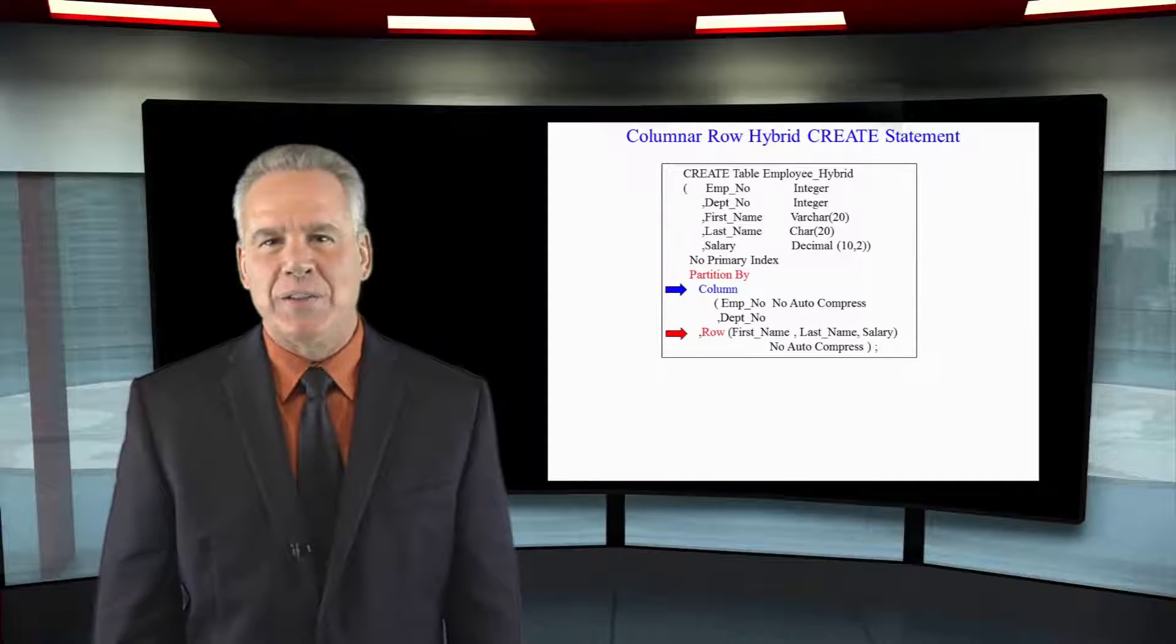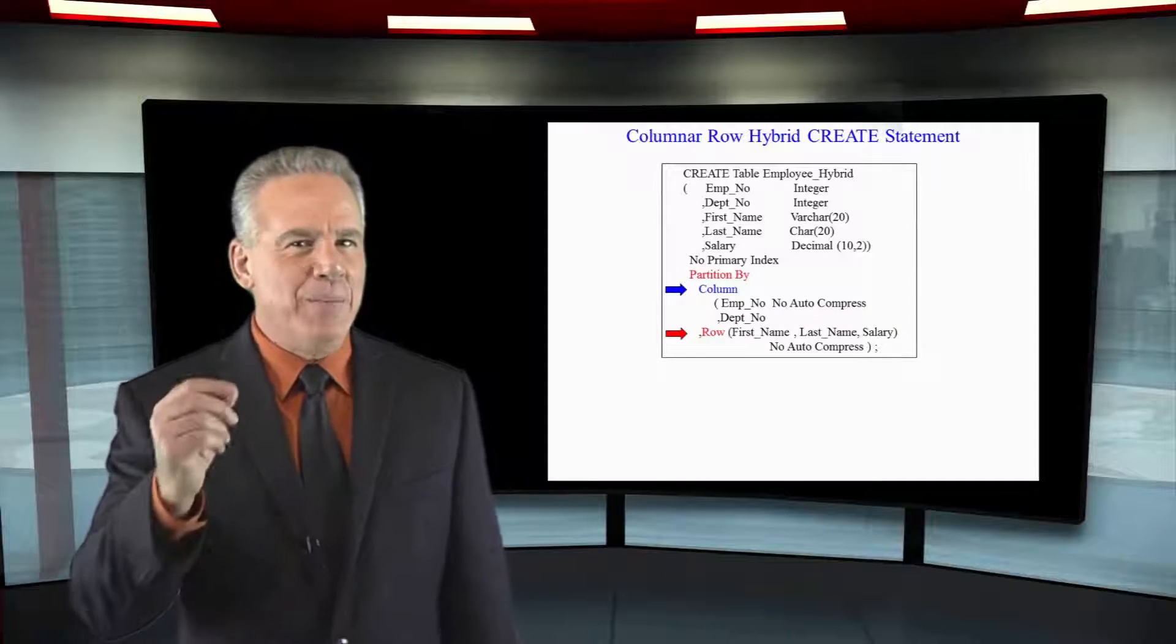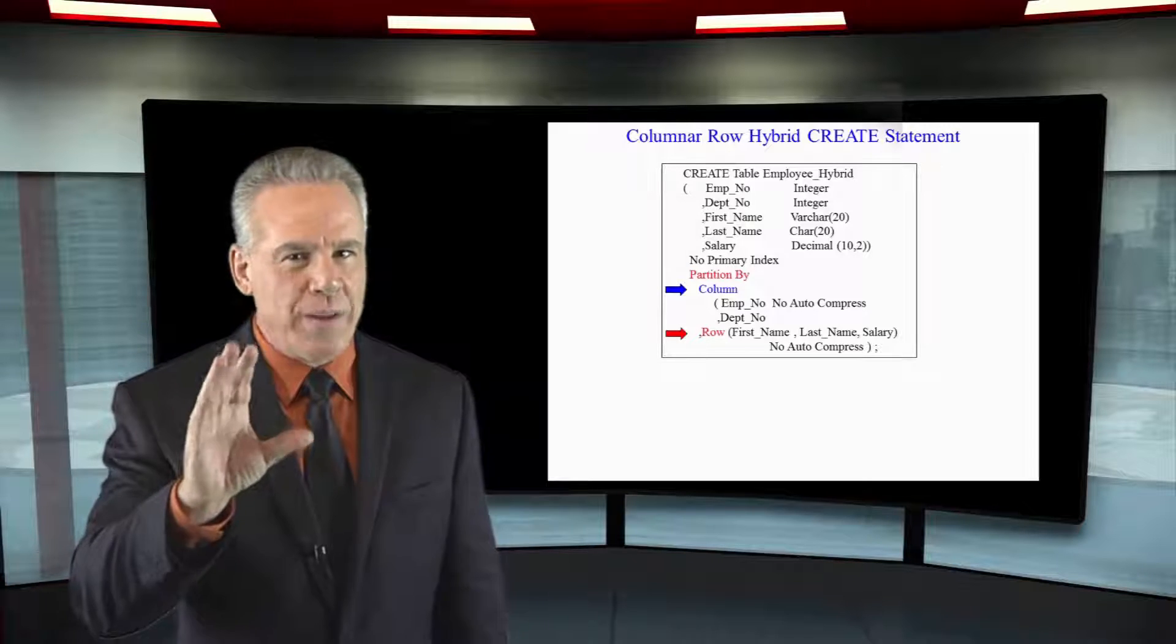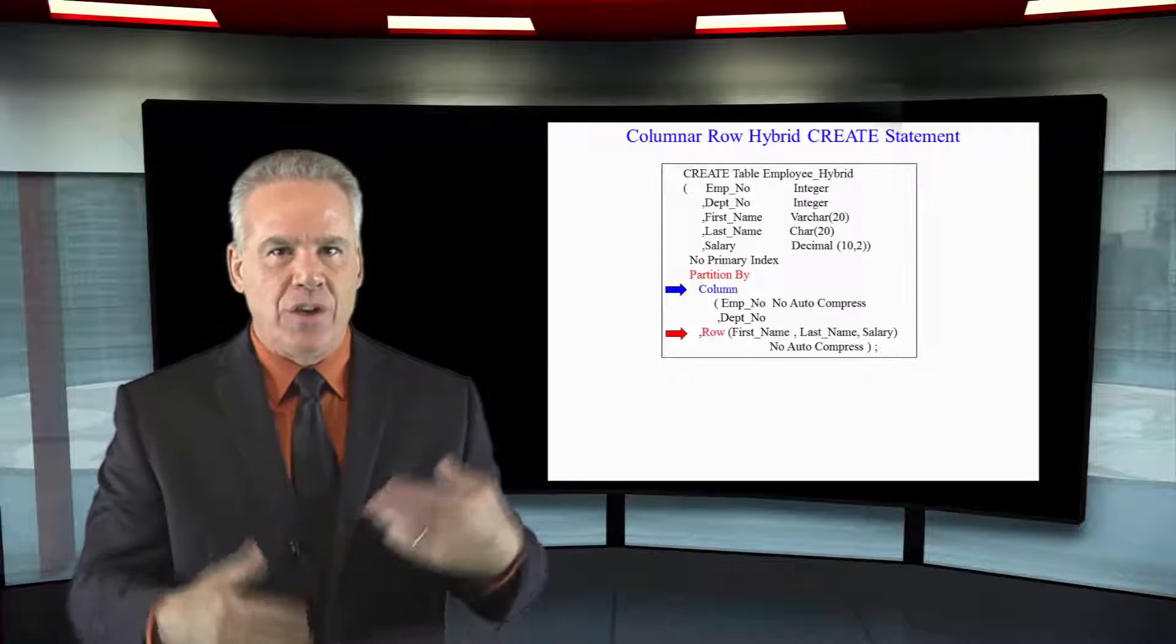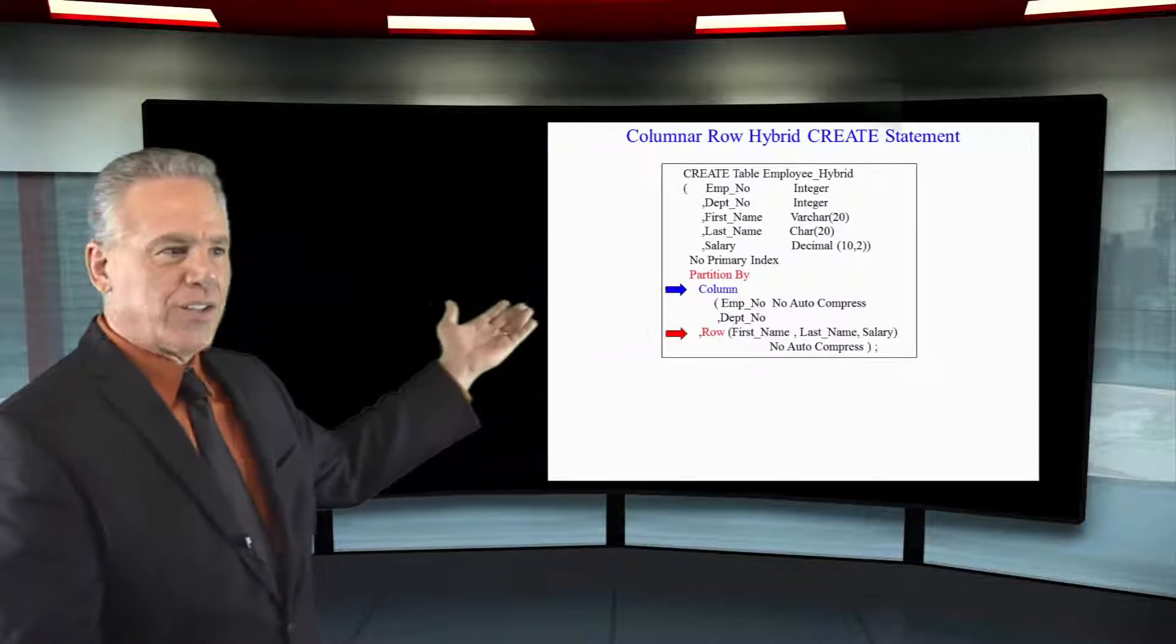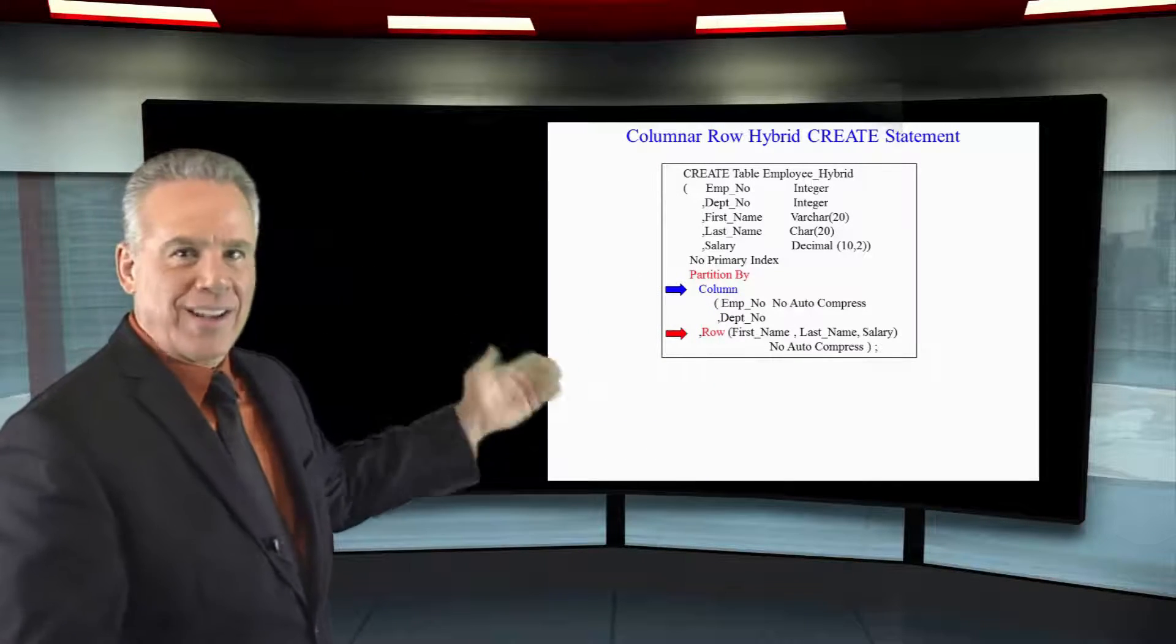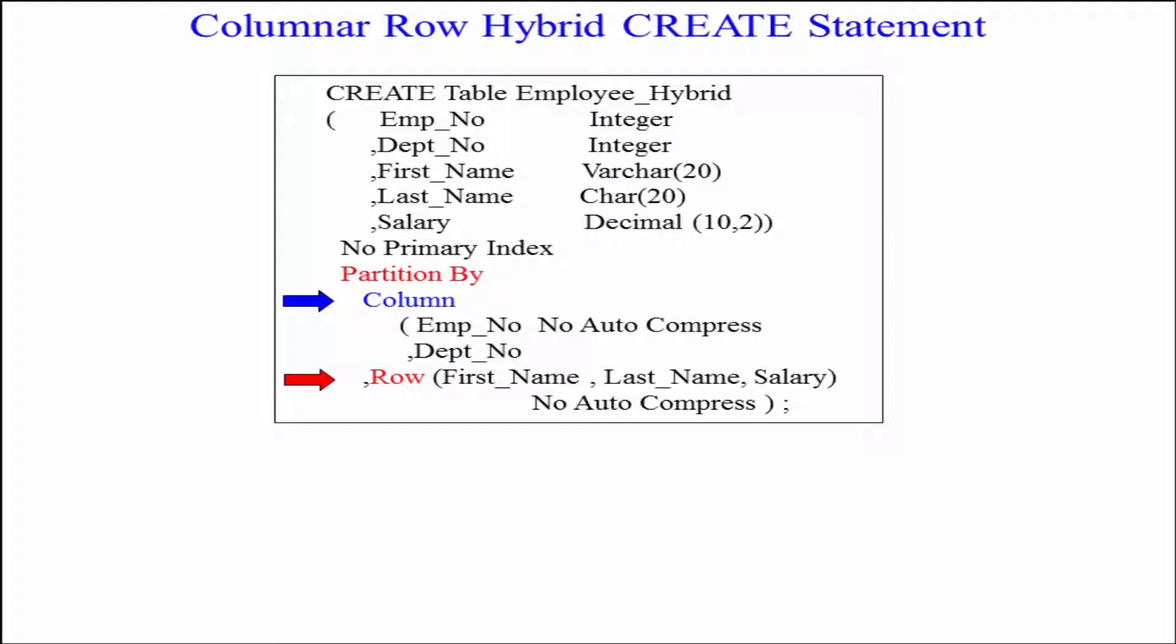One of the great things about columnar is they're able to compress the table quite a bit with a wide variety of compression techniques, but you can say no auto compress, and it will not compress at all, which makes the load a little bit faster.